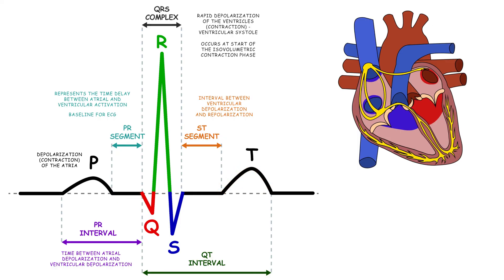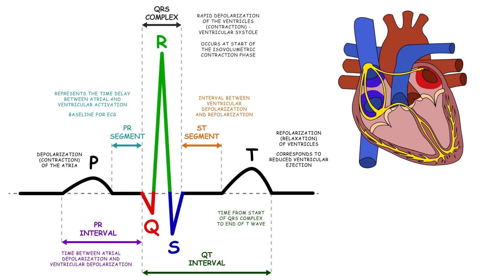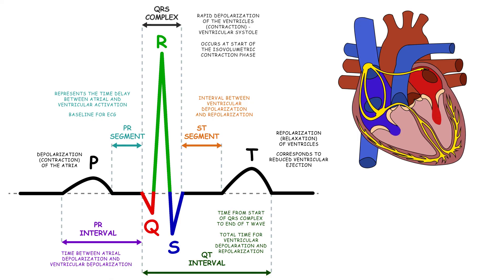Then there's the T wave, a dome-shaped waveform that represents repolarization, or relaxation, of the ventricles. It corresponds to phase 4, reduced ventricular ejection. The QT interval is the time from the start of the QRS complex to the end of the T wave, and it represents the total time for ventricular depolarization and repolarization.